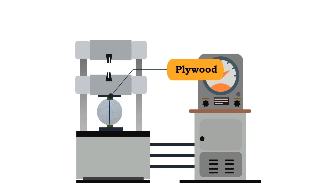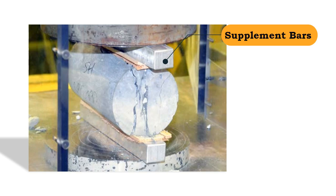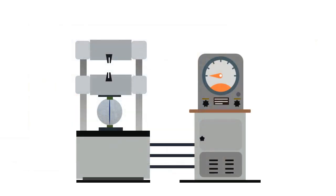Sometimes supplement bars are placed on top of the plywood depending upon the diameter of the specimen. Now apply the load continuously at a rate within the range 1.2 to 2.4 MPa per minute. Finally, note down the load at which the cylinder fails by developing cracks.